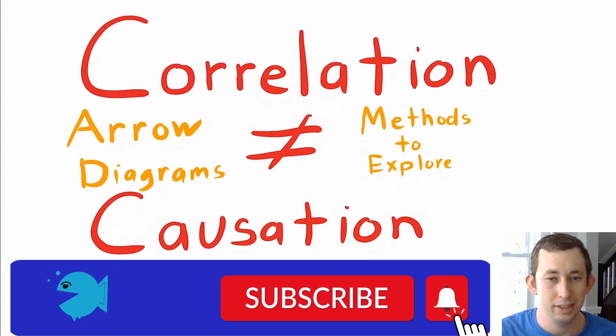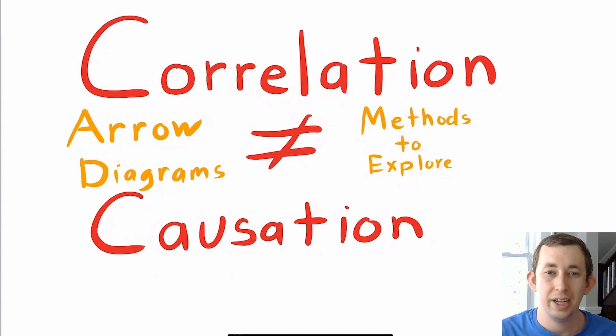And the way I want to introduce causal methods is by talking about how correlation is not equal to causation. One of the reasons we have these fancy tricks in econometrics, like IV or difference-in-differences, is because we have correlation in the data and we want to prove why some of those correlations are causations. And in order to do that, we need to understand why correlation could not be equal to causation.